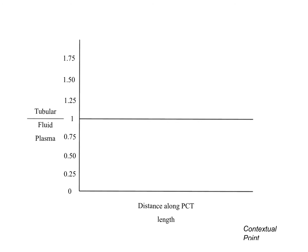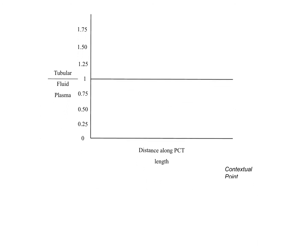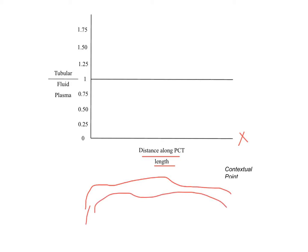Let's try to understand this graph. The x-axis depicts distance along the proximal convoluted tubule length. We are looking at the proximal convoluted tubule and the fluid going across it. This graph starts at 0 and goes through the proximal convoluted tubule as fluid moves along it.